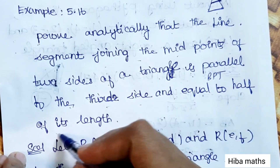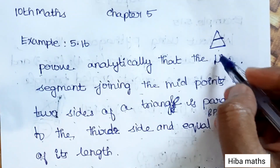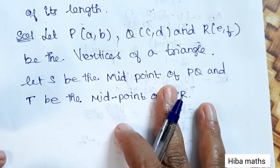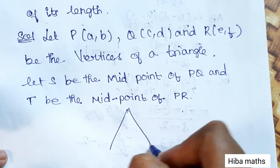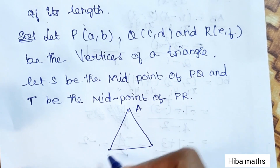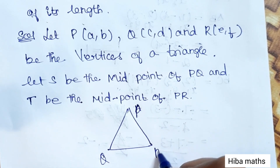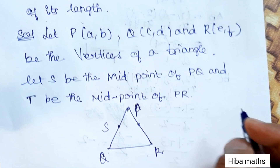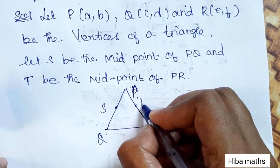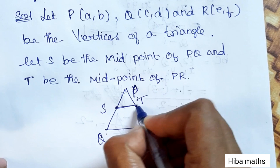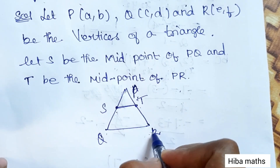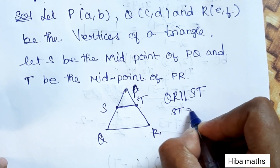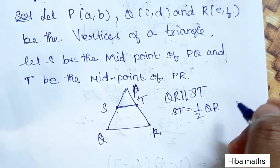We will prove it is equal to half of its length. Let's explain with a diagram using triangle PQR. The midpoint of side PQ is S, and the midpoint of side PR is T. If we join the two points, ST is parallel to QR — this is the first condition. The second condition is ST is half of QR. We will prove both.